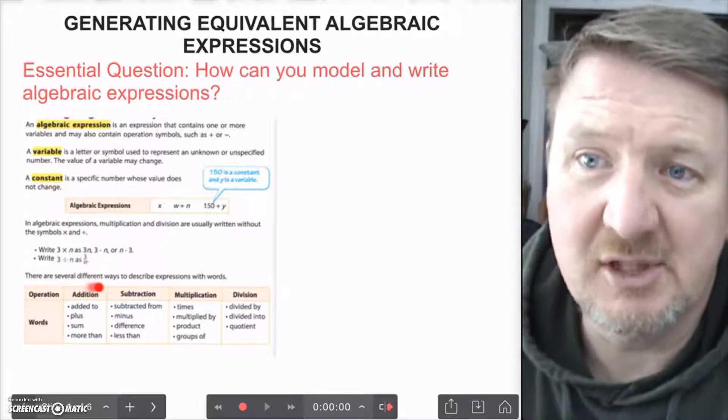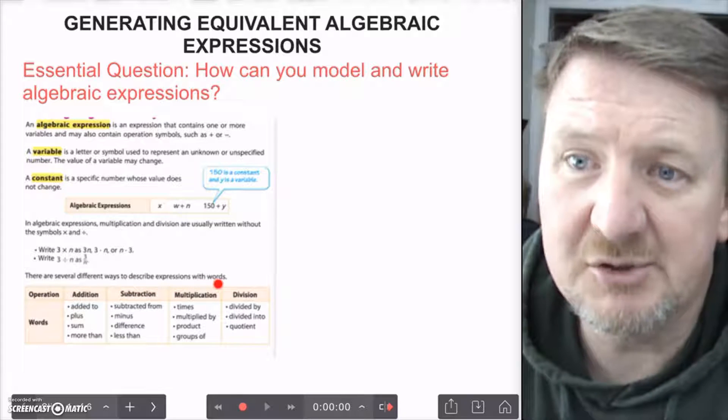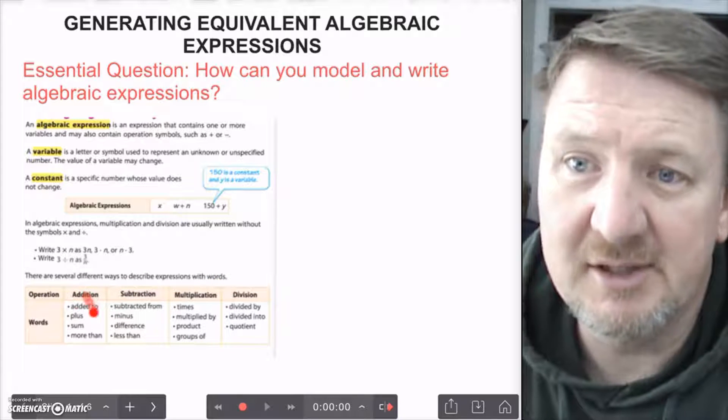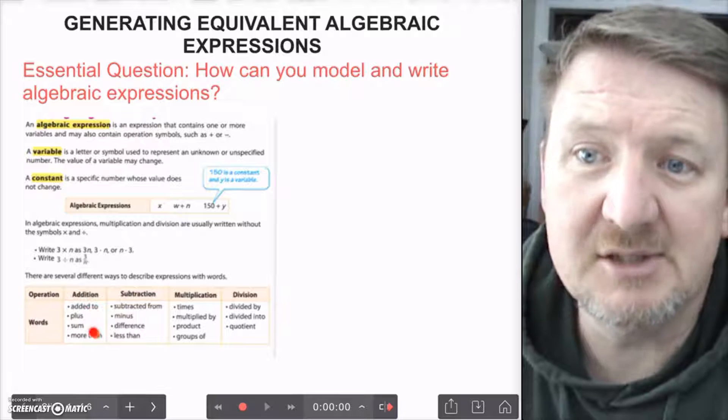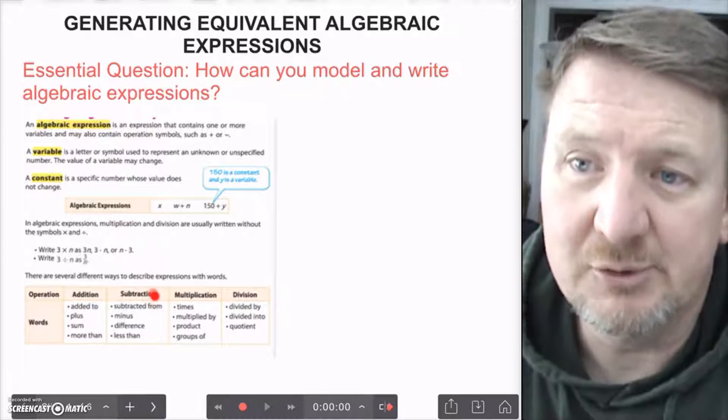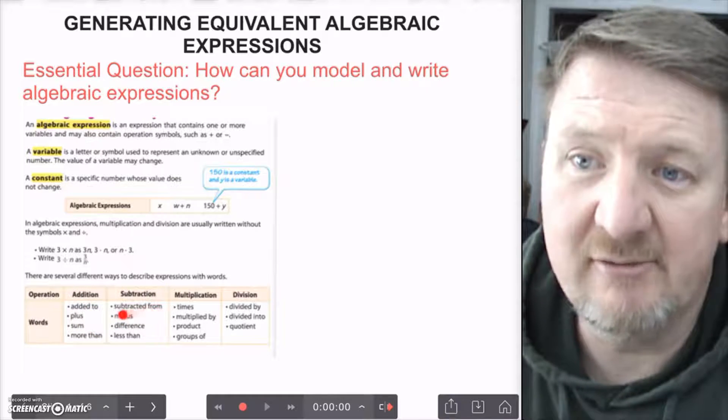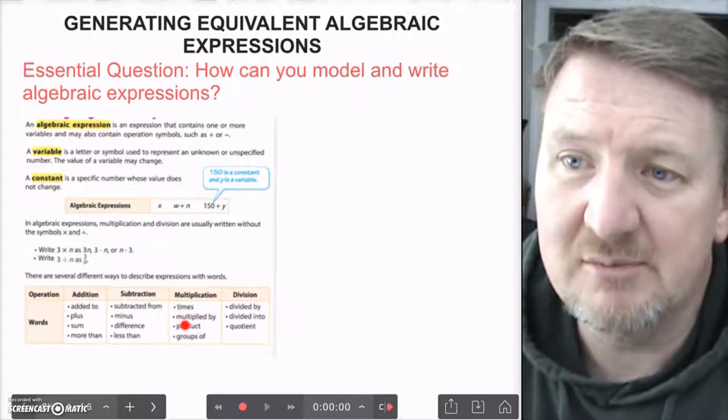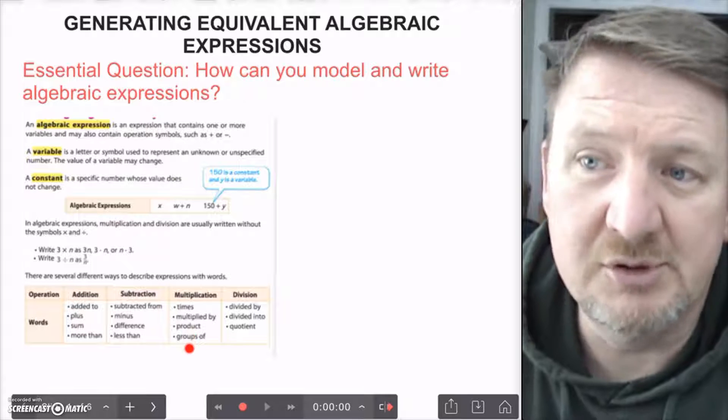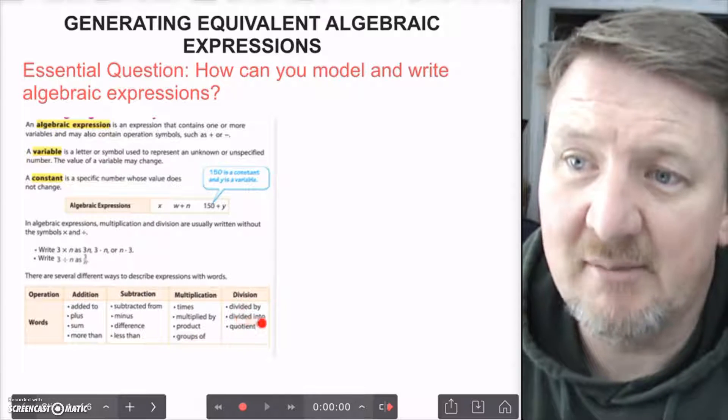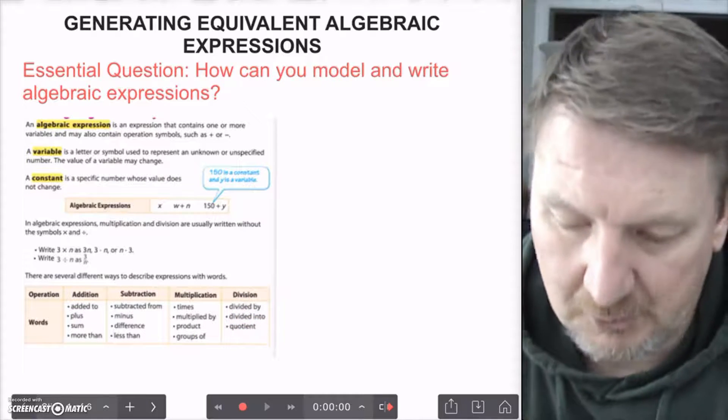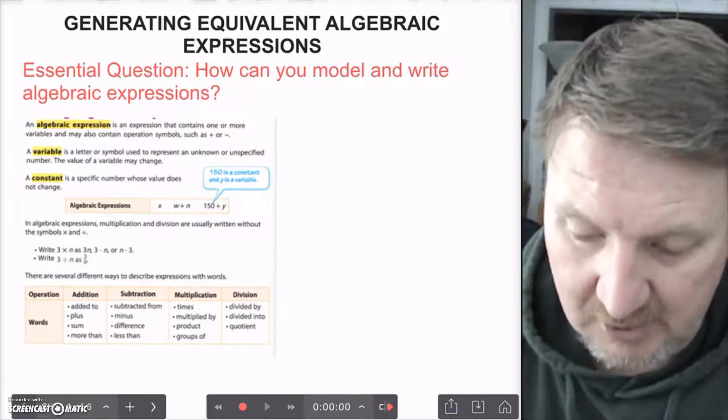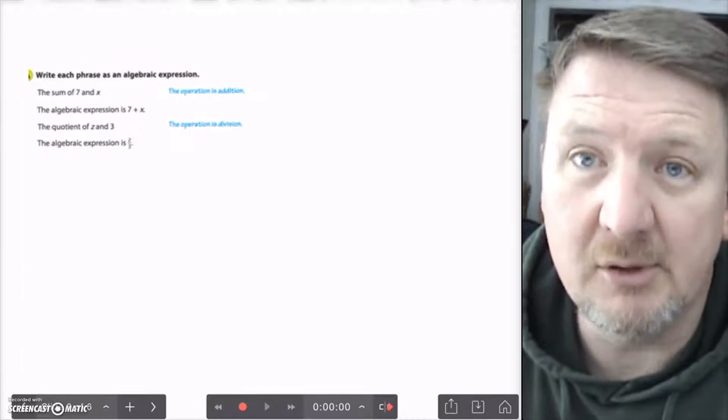You can write division, 3 divided by n, as 3 over n. That bar in the middle means to divide. And we have this poster up in the room. There are several different ways to describe expressions with words. If you're talking about addition, you have words like added to, plus, sum, or more than. Subtraction - some of the words may be subtracted from, minus, difference, less than. And multiplication, you have times, multiplied by, product, or groups of. Division may be divided by, divided into, quotient, or even equal groups.